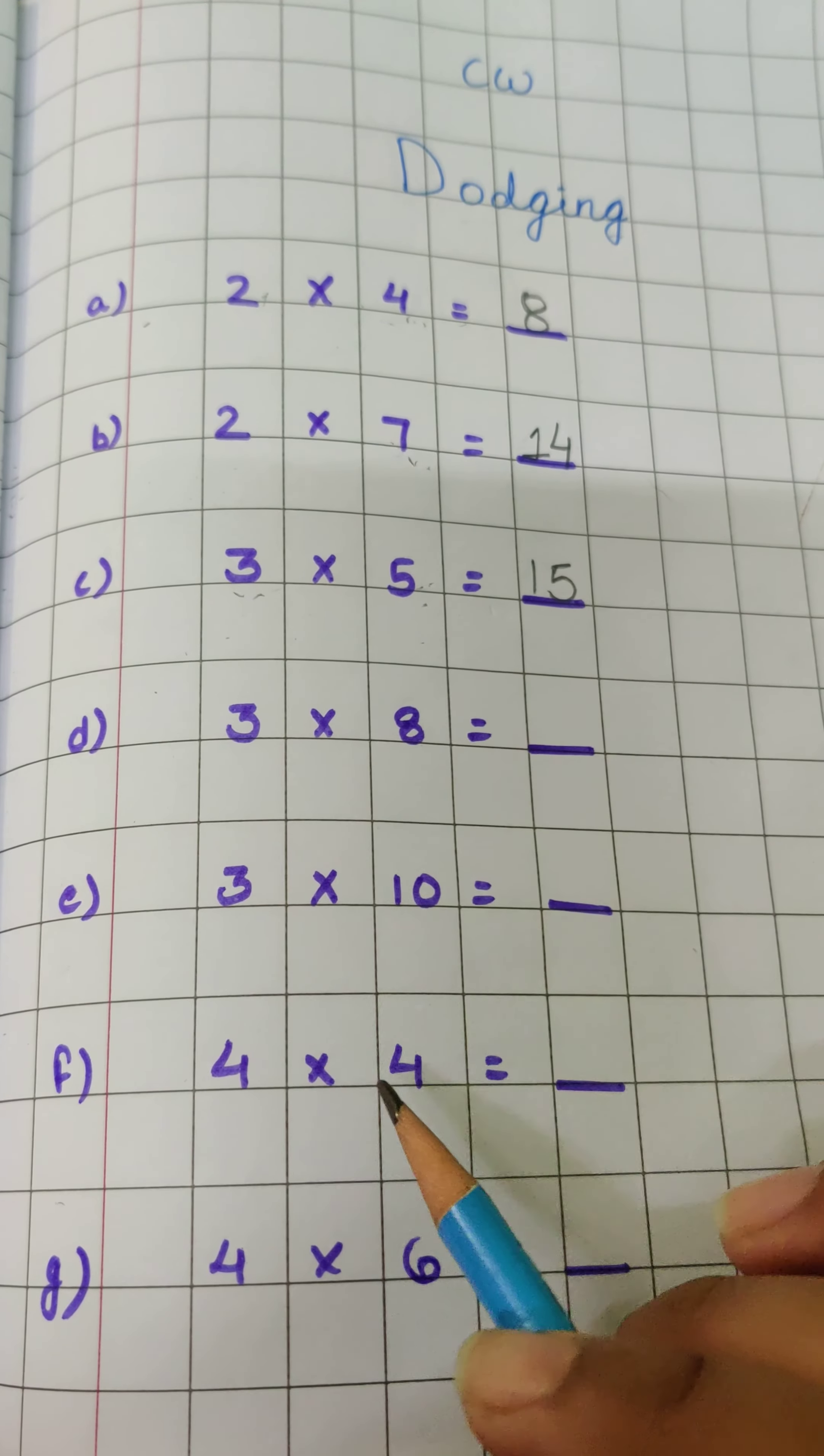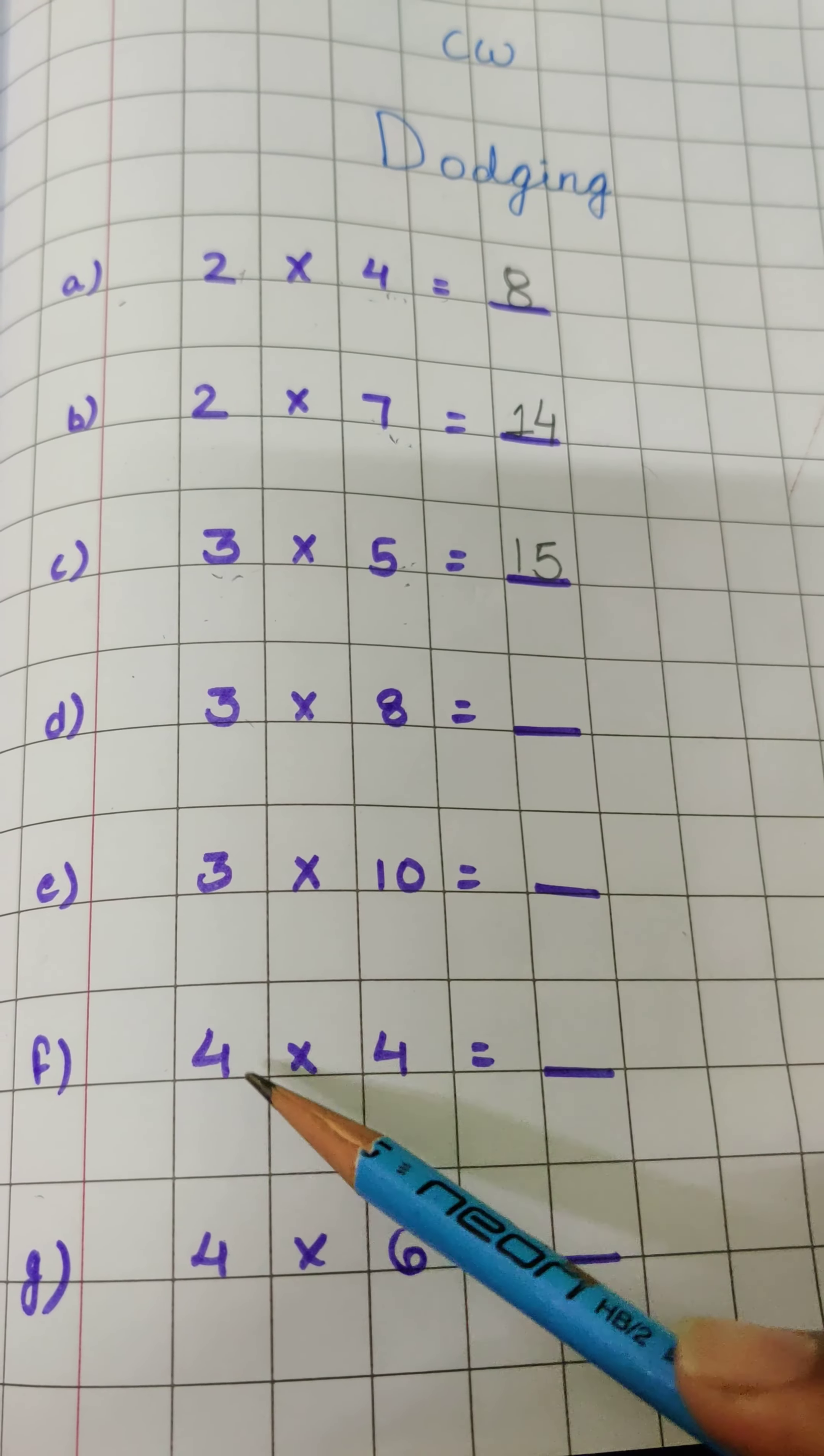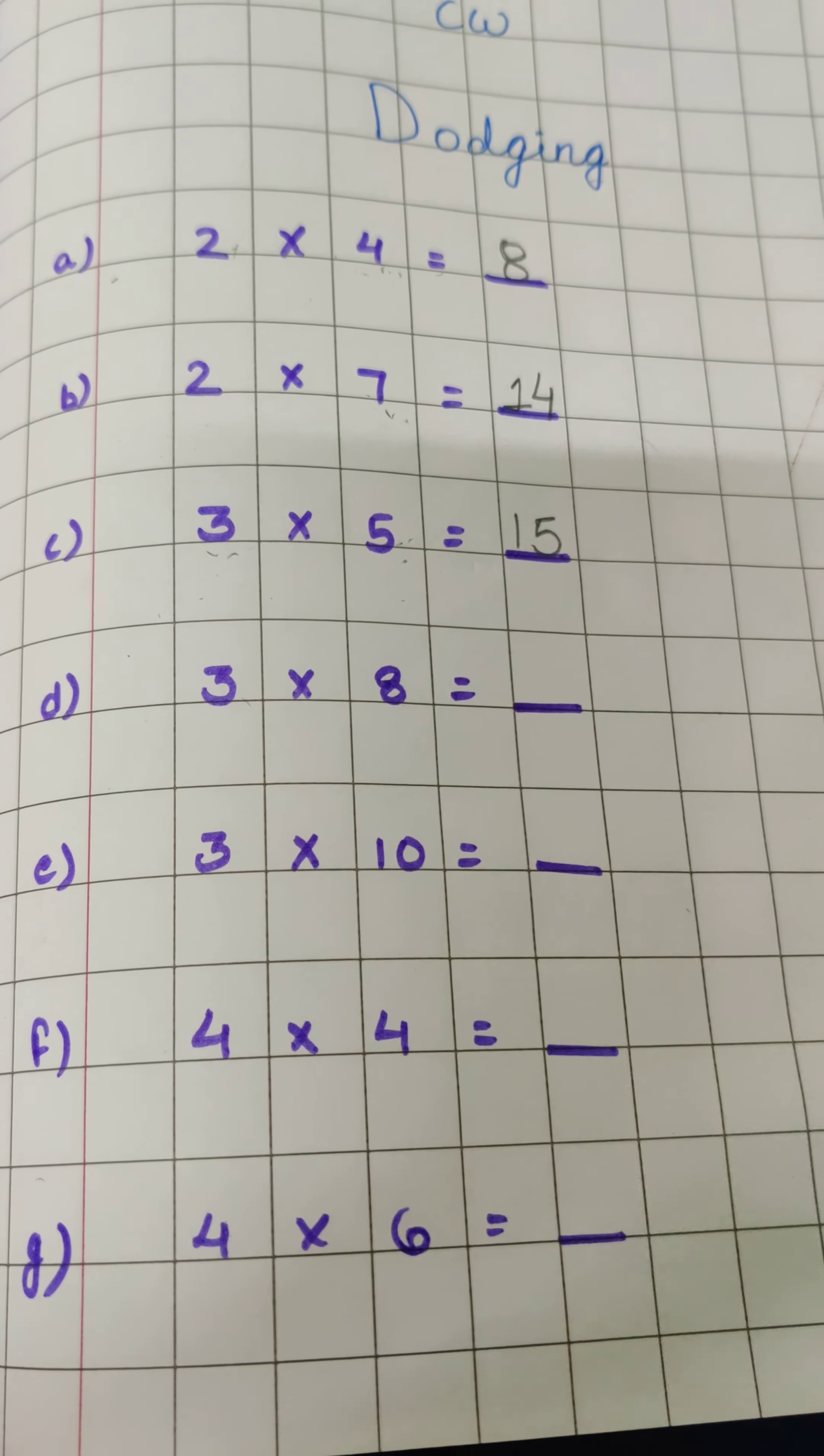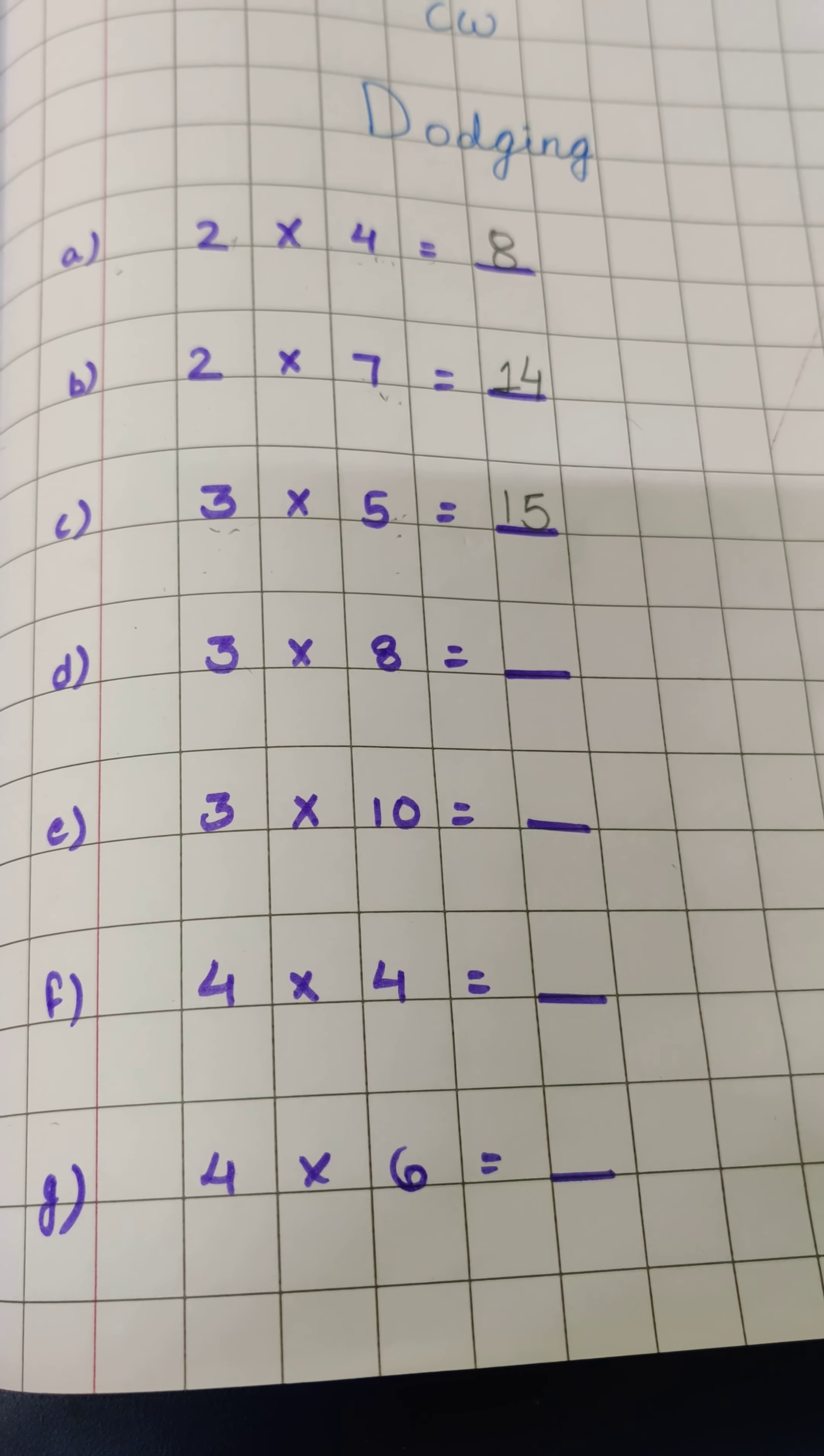So this is your dodging of table 2 to 4. Now try to solve these four by yourself while reciting the table of 3 and 4. Write it down in your maths copy and send me. Thank you.